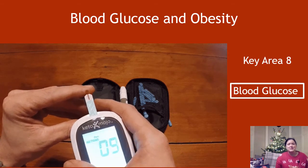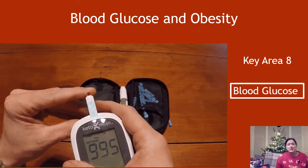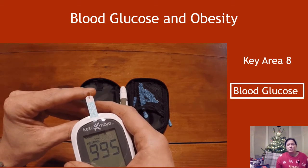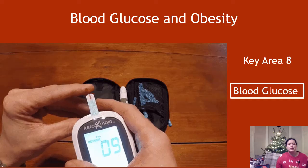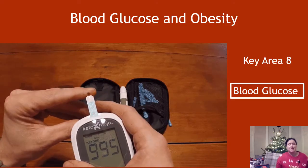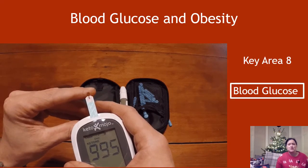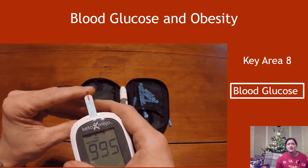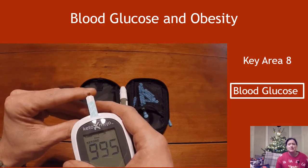Hi there. We've made it to key area 8 of unit 2. This is the last key area of unit 2 and it is about blood glucose and obesity.